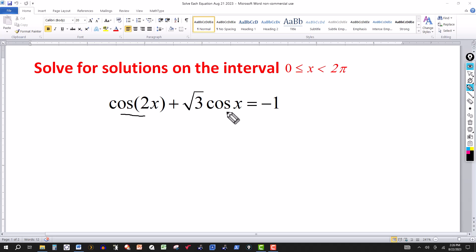We try to get the same argument, either both 2x or both x, unless we can split them up by factoring. But in this case, the only option is to use an identity for this one here.